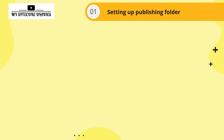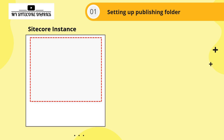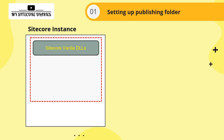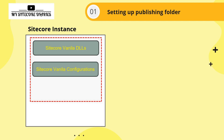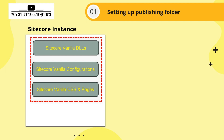Setting up the publishing folder. When you install Sitecore, it is basically a .NET website. In the bin folder, you will see many DLLs referenced to Sitecore — these are the Sitecore vanilla DLLs — along with dependencies. You also have the basic default Sitecore configurations, and the required CSS, pages, and other files.